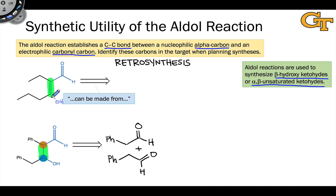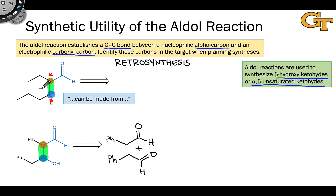The key bond is still between the alpha carbon of one molecule and the carbonyl carbon of the other, but the carbonyl carbon of the electrophilic component is harder to see since water was eliminated to generate the double bond. We imagine the hydroxyl group present in the initially formed aldol addition product; after elimination of water, we're left with the double bond between the alpha and beta carbons. To generate the reactants, we cleave the bond between alpha and beta carbons, introduce a carbonyl at the electrophilic beta carbon, and saturate the alpha carbon — giving the same aldehyde for both components.